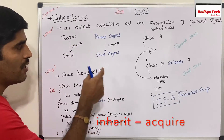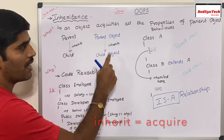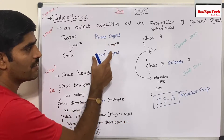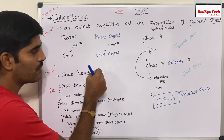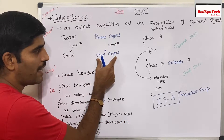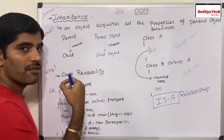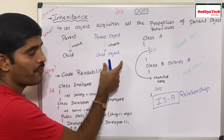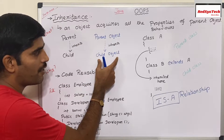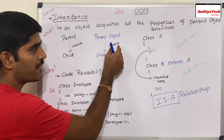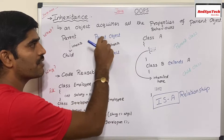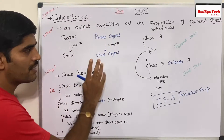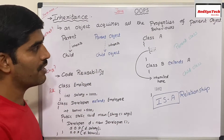Similarly, in Java, let's say we have two classes — a parent class and a child class. The object of a child class is called a child object. So this child object inherits the properties and behaviors from the parent object. Let's see how it actually works with an example.